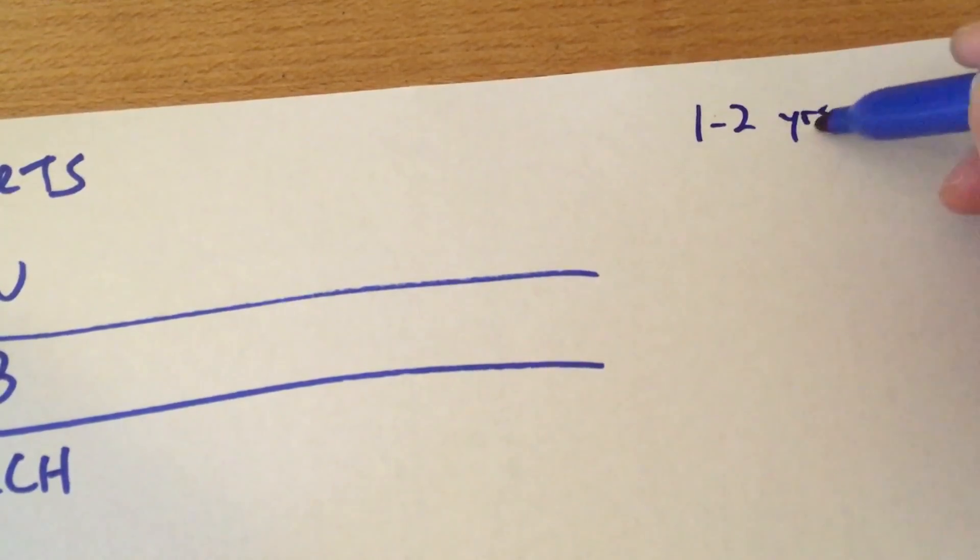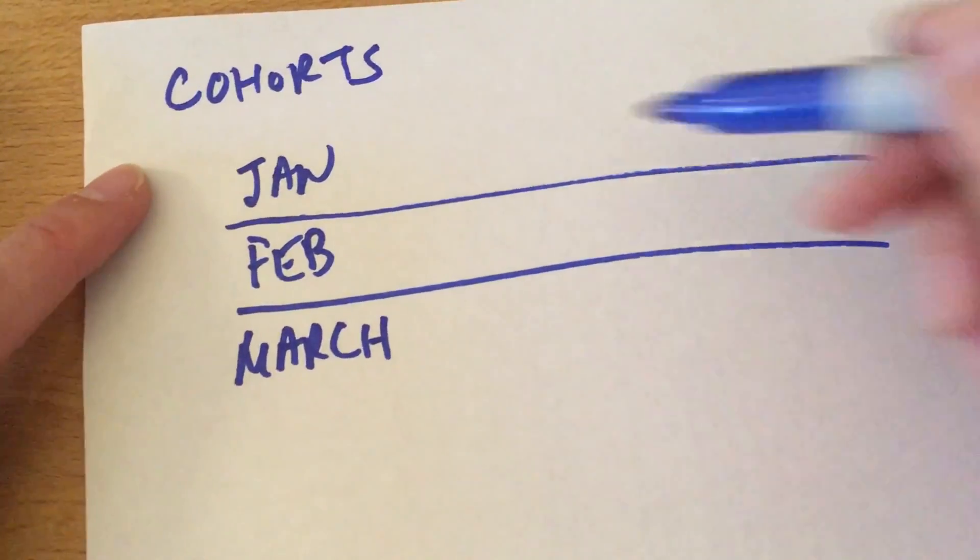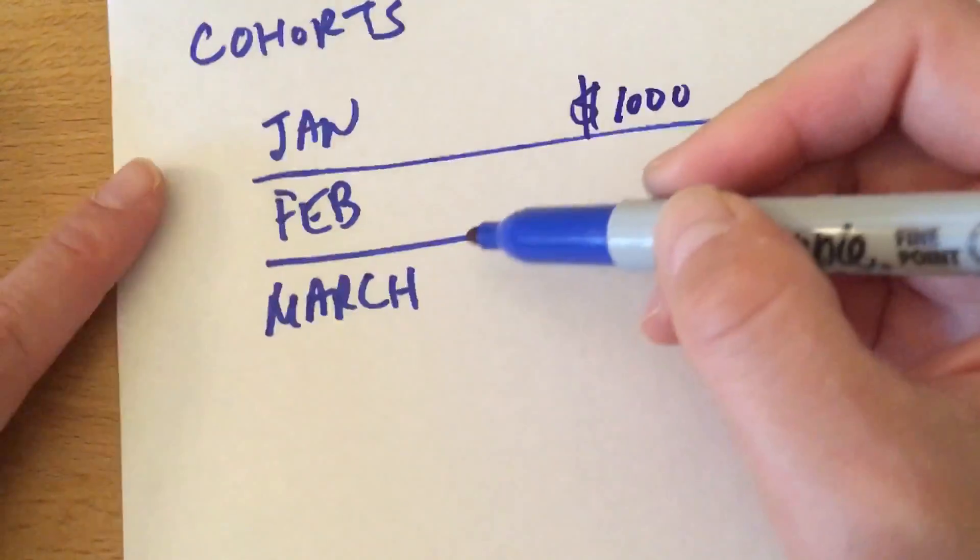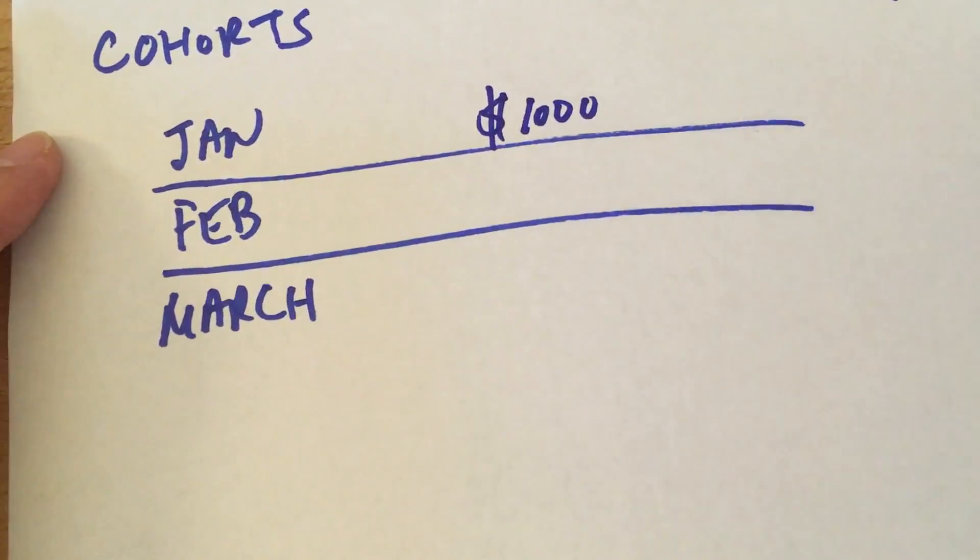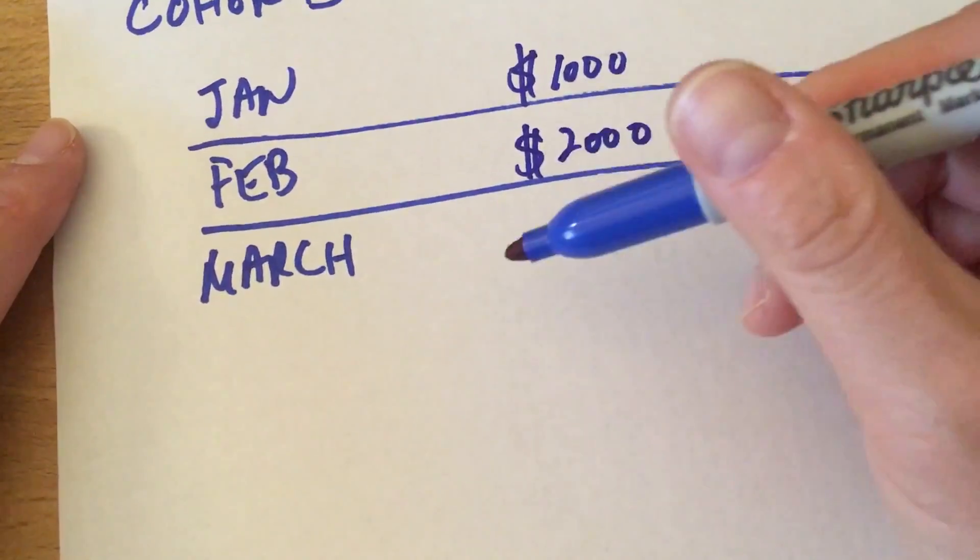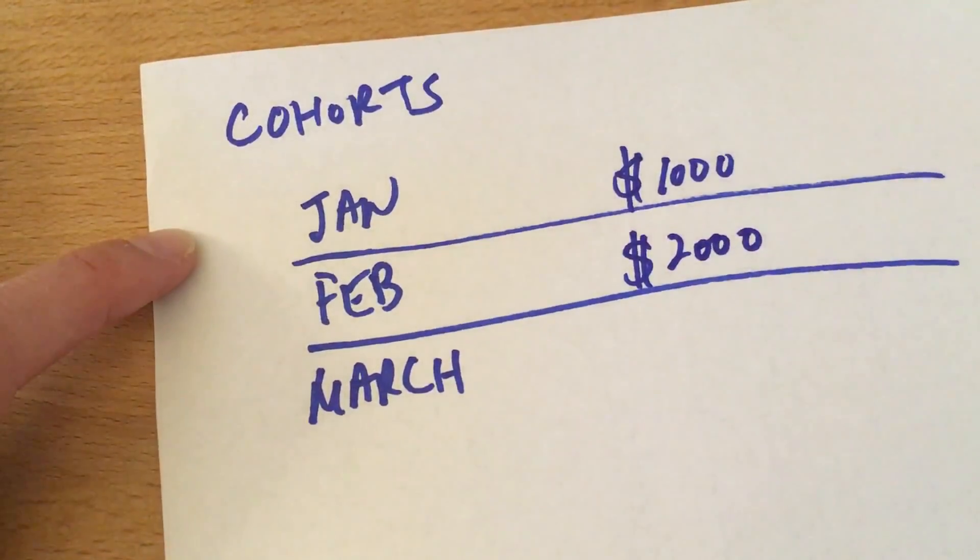Aha, like the January cohort after one year was worth a thousand dollars, but the February cohort that has been around for a year is actually worth two thousand dollars. And so from that perspective we want to be tracking groups by cohorts.